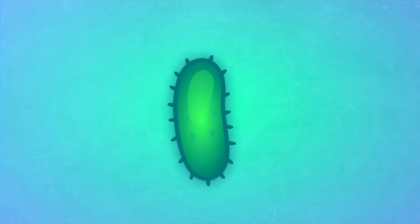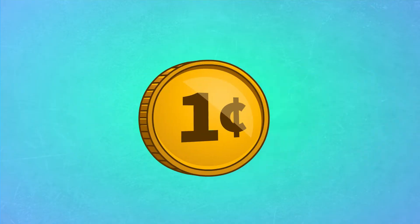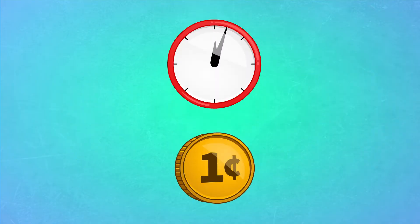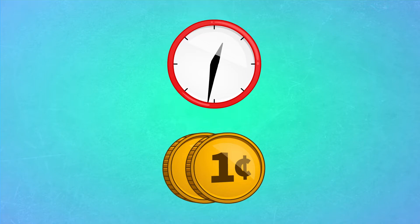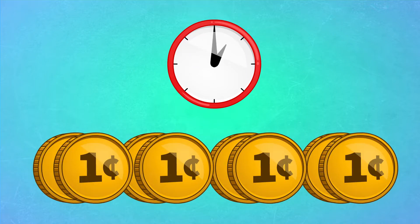To understand exponential growth, imagine that instead of starting with one bacterium, we start with one cent. This penny will double in value three times every hour, just like bacteria can when growing under ideal conditions.